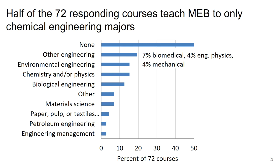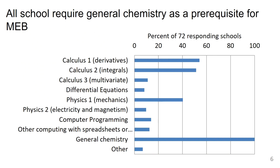We were curious who was in the classes for material and energy balances. Half of the classes have only chemical engineers in them. The other common students are other engineering majors, primarily biomedical engineering, physics, mechanical, environmental engineering, and biological engineering. We also have students from chemistry and physics and a scattering of other majors in the classes.